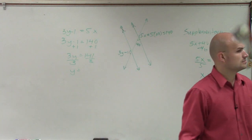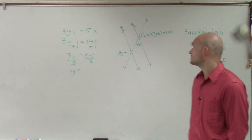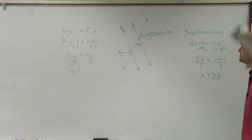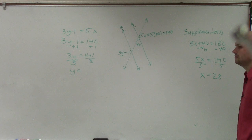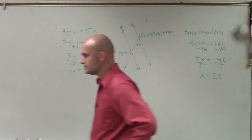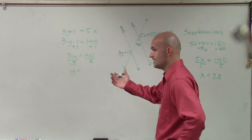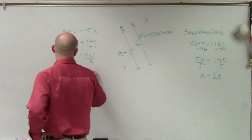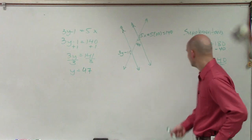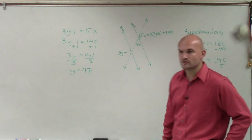So y equals... yes? No? Oh, OK. Is it 3y minus 1? Was that the problem? Yes. Where is 47? Oh, y equals 47? Yeah. And there you go. x is 28, y equals 47.